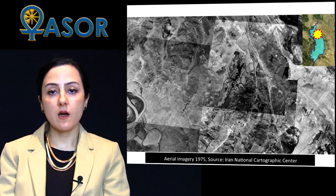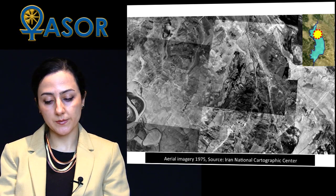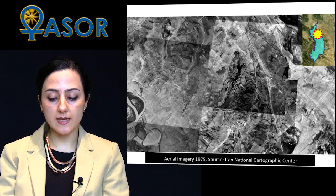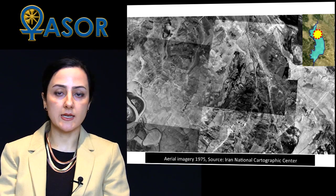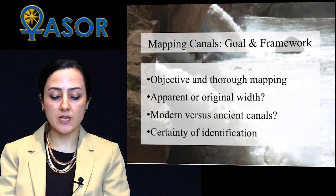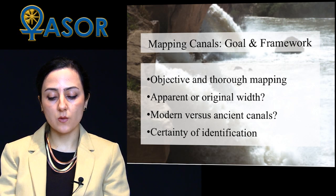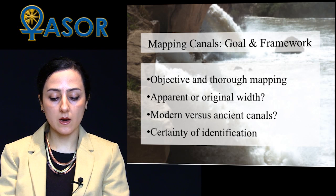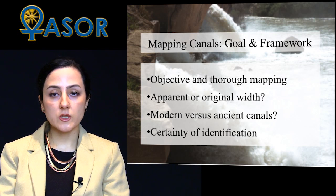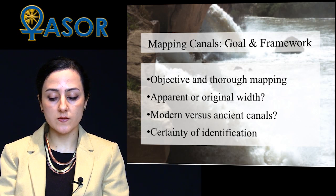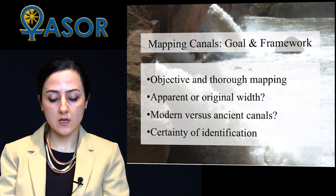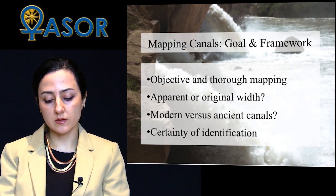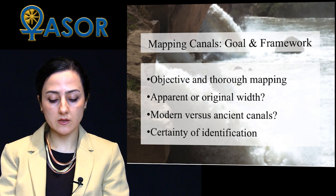Being objective proved hard given the high amount of information preserved in the aerial imagery. After some trial mapping, it was decided that mapping canals of 4 to 5 meters wide or bigger would maintain the balance between detail and efficiency. A second challenge was whether the apparent widths of a canal represent original widths — canals that were short-lived were easier to deal with, while those used over time appeared much smaller due to sedimentation and erosion. Modern canals were mapped only where they clearly relate to ancient canal systems.